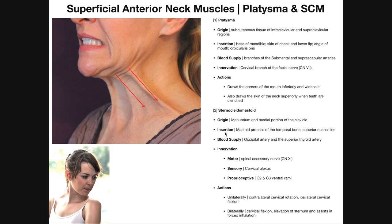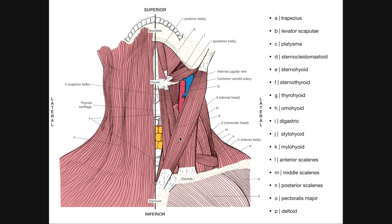Both heads fuse superiorly and insert on the mastoid process of the temporal bone — we usually just say mastoid process. It also partly attaches on the superior nuchal line, but mainly we consider the mastoid process. So the sternal head originates on the manubrium, the clavicular head on the proximal clavicle, the fibers run superiorly, fuse, and insert at the mastoid process.